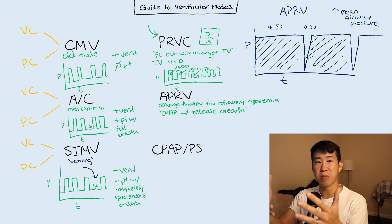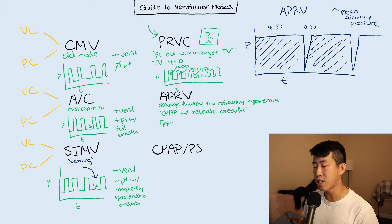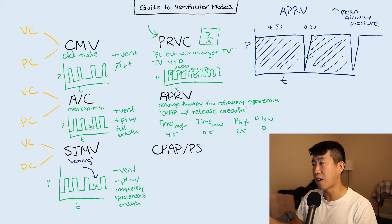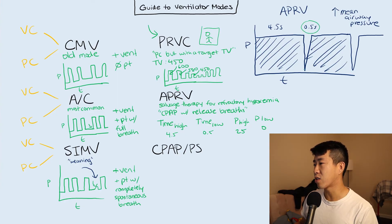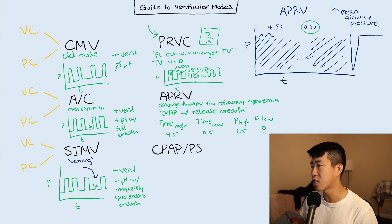One thing to note is that the patient can be taking spontaneous breaths on top of the APRV waveform. In terms of settings, APRV uses a time high and time low — in our example, time high is 4.5 seconds and time low is 0.5 seconds — plus a pressure high and pressure low. Typically you start with a pressure high of around 25 and a pressure low of zero, meaning no PEEP. A concern is that during the release breath you might get complete alveolar collapse or atelectasis. However, because the release breath is so short, it doesn't quite allow complete compression of the alveoli, so atelectasis is avoided. If you prolong the release too much, then you need to add PEEP. Having a really short, quick release breath is a key feature of APRV.